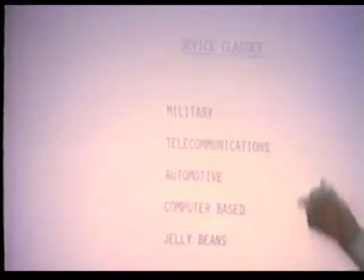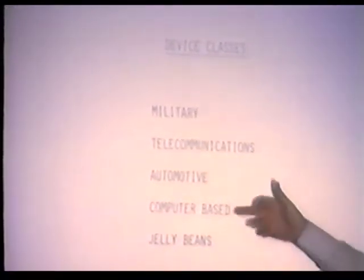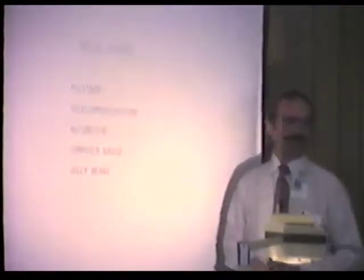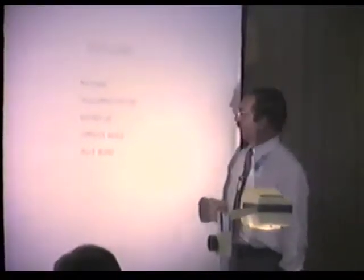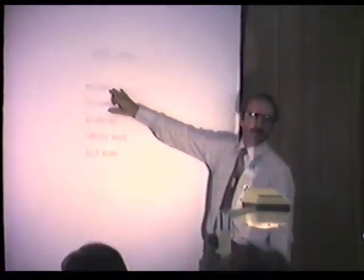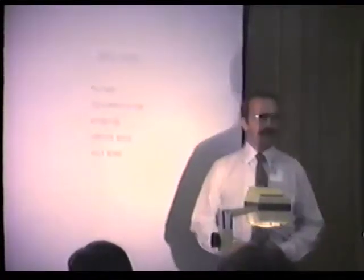The device categories are: military parts, telecommunications, automotive, computer-based, and what we call jelly beans. Jelly beans are the least expensive and easiest to get. We cross all these borders when buying parts depending on what a system needs at Sandia. We prefer to work with military product — telecommunications are the next most reliable and the second most expensive.